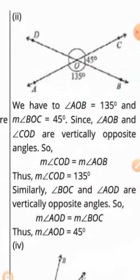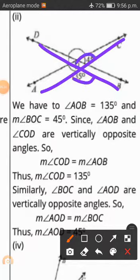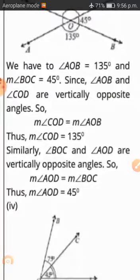In the second part, AOC is equal to 135 degrees and BOC is equal to 45 degrees. Since AOC and COD are vertically opposite, COD equals AOC — so COD equals 135 degrees. Because vertically opposite angles are equal in measure. Similarly, BOC and AOD are also vertically opposite angles, so AOD equals BOC equals 45 degrees.